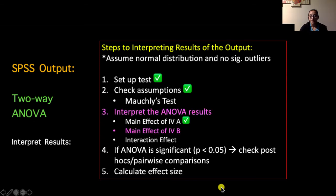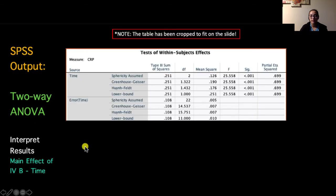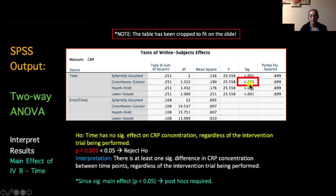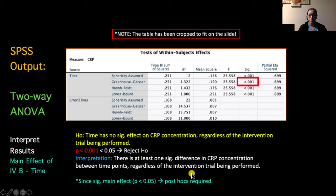Next, we look at the main effect of Time. The Greenhouse-Geisser adjusted p-value is less than .001, which is less than .05. We reject the null hypothesis and argue that there is at least one significant difference in CRP concentrations between time points, regardless of the intervention trial being performed. Since this main effect is also significant, we need to run post-hoc tests for time.